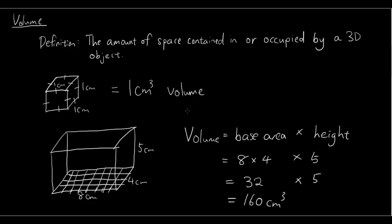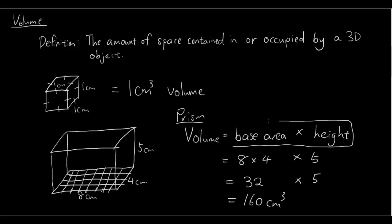For a prism, the volume is base area times height. This is the formula for finding the volume of a prism.